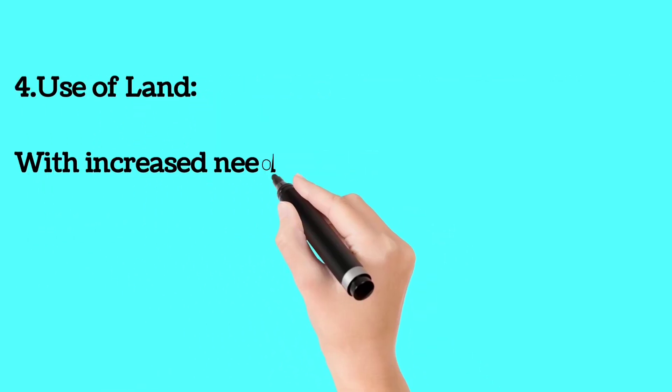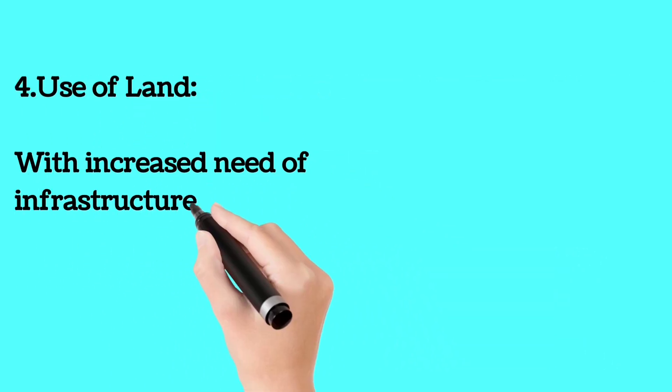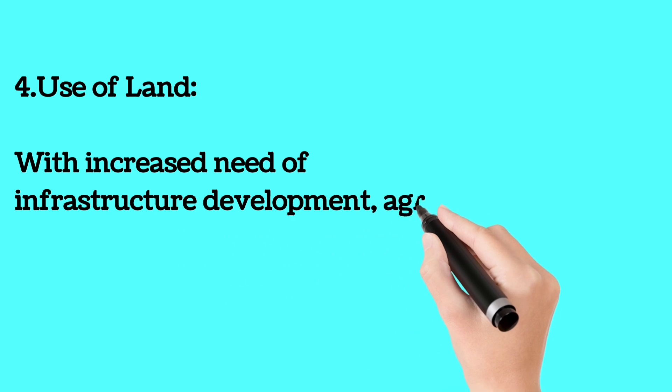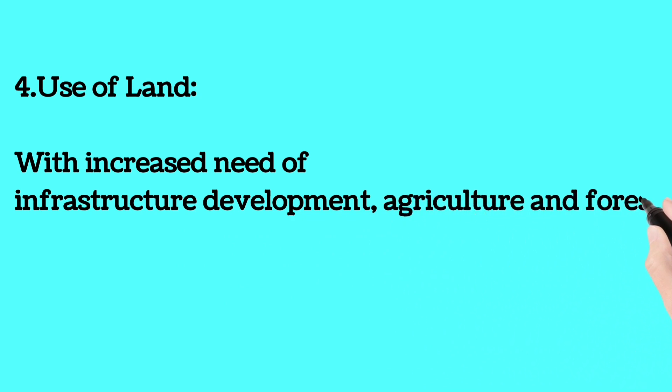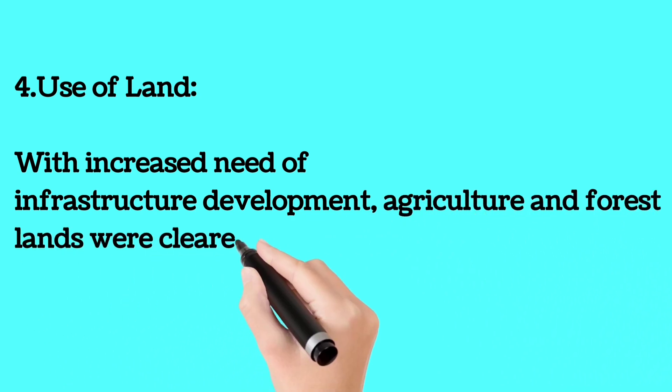Four: Use of land. With increased need for infrastructure development, agriculture and forest lands were cleared.